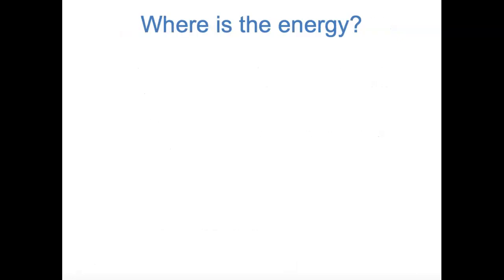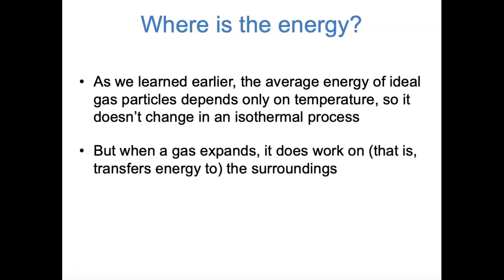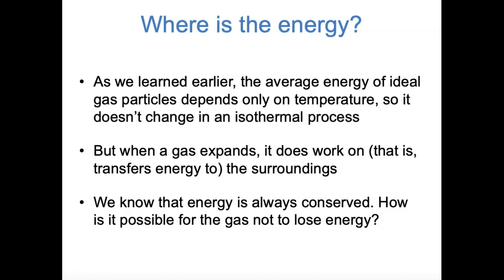Now that we've defined pressure-volume work, let's think about a big-picture question: where is the energy during a process like the expansion of an ideal gas? As we saw in our coverage of statistical mechanics and kinetic molecular theory, the total energy of an ideal gas depends only on the temperature. So if the temperature stays the same, the total energy of the gas isn't going to change. But when a gas expands, it does work on the surroundings—W is negative—and the gas loses energy to the surroundings through work. Since energy is conserved, how would it even be possible for a gas to have an isothermal expansion while losing energy as work?